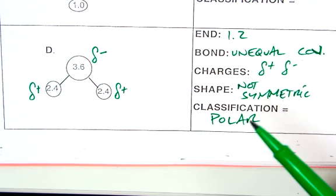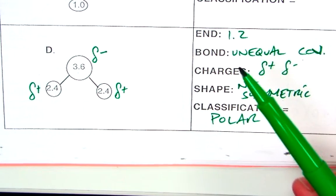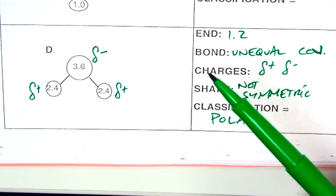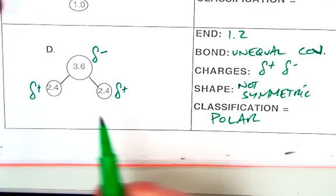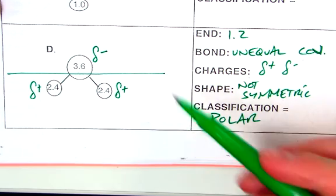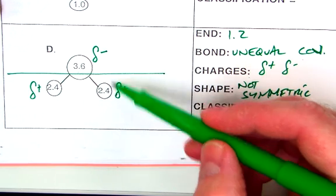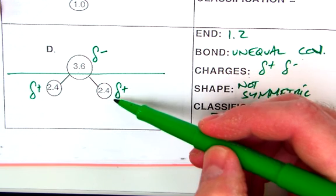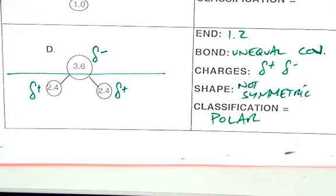Another way to think about it is no matter which way you look at this, does this look like a magnet? Because magnets have poles. So if we were to draw a line of symmetry this way, the top is a little bit negative, the bottom is a little bit positive. That's like poles like on a magnet. That's another way you can think about is this a polar or a non-polar molecule.